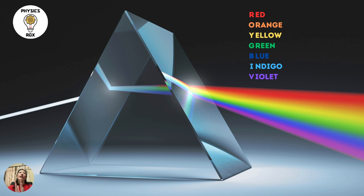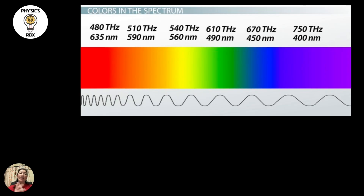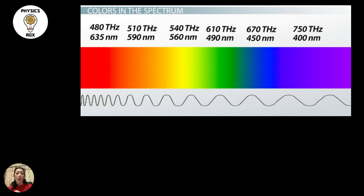What makes these colours different from one another? Besides the obvious visual difference, what also distinguishes them are their frequencies and wavelengths. On the colour chart, the red end starts at around 480 terahertz and 635 nanometres for frequency and wavelength respectively. As you move across to violet, the frequency increases while the wavelength decreases — violet has a frequency of 750 terahertz and a wavelength of 400 nanometres.